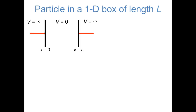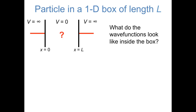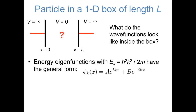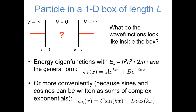We know that the wave function is equal to zero outside the box, and what we're trying to figure out is what do the wave functions look like inside the box. As we showed in a previous video, energy eigenfunctions that have energy h-bar squared k-squared over 2m can be expressed as a sum of complex exponentials e to the ikx and e to the negative ikx. Alternatively, we can express these same energy eigenfunctions as a sum of sines and cosines, sine kx and cosine kx. These two forms are actually completely equivalent. Euler's formula allows us to express complex exponentials as sines and cosines, or vice versa.